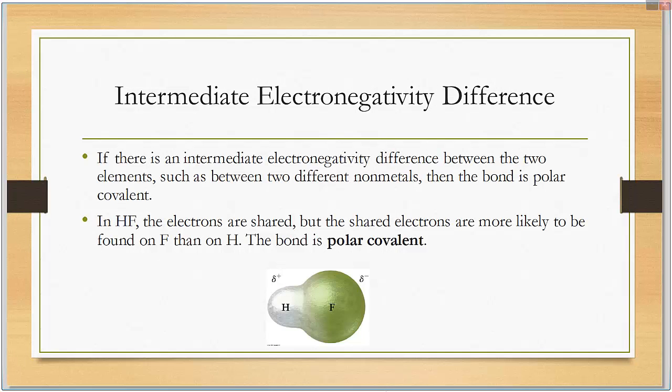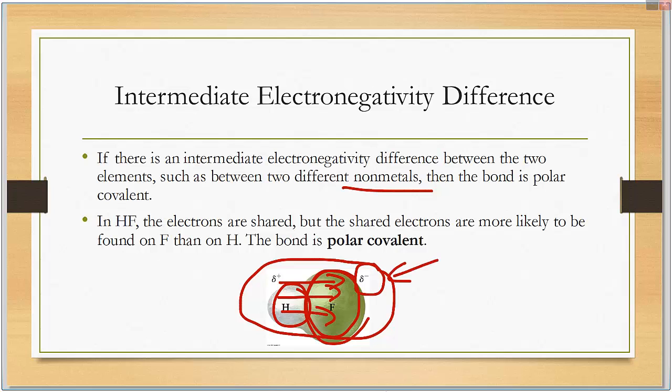With polar covalent, we have it in the middle between these two extremes. If there's an intermediate electronegativity difference between the two elements, such as between two different nonmetals, then the bond is polar covalent. Here's an example of hydrogen fluoride. The electrons are shared, but the shared electrons are more likely to be found around the fluorine than around the hydrogen. Therefore, the electrons are drifting towards the fluorine. They have this symbol for partially negative, leaving hydrogen partially positive.